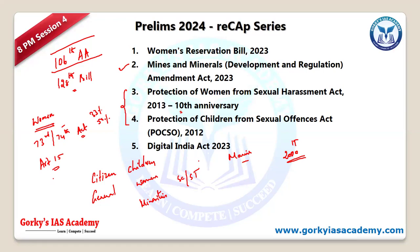Setting aside the Women Reservation Bill, they can ask you in other sets. If they ask whether the Women Reservation Bill is the first reservation provided by the Constitution — it is not, because we already have the 73rd and 74th Amendments. What are the differences in provisioning women's reservation in 73rd/74th amendments versus the 106th Amendment Act?